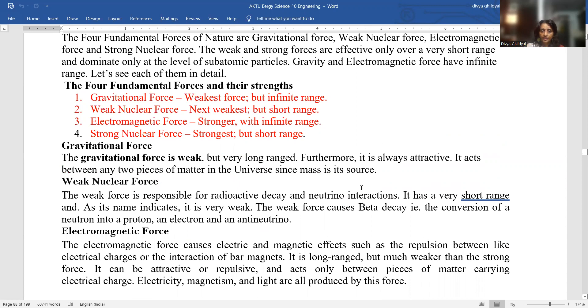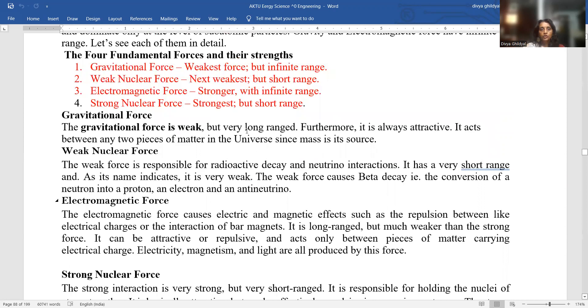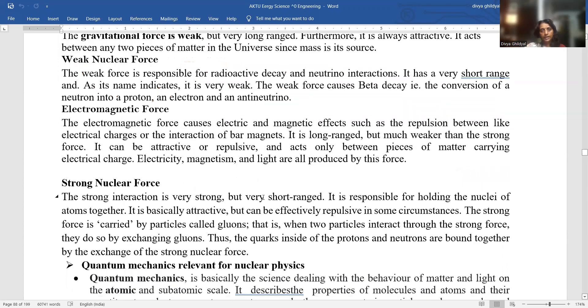Gravitational force is the weakest, but it has a very long range. It is always attractive. If you remember the formula, F is equal to G into M1 into M2 upon R squared. So it acts between two pieces of matter in the universe. Weak nuclear force is responsible for radioactive decay and neutrino interactions. It has a very short range and its name indicates it is weak. Electromagnetic forces, they are the cause of electric and magnetic effects such as repulsion between like electrical charges or the interaction of bar magnets. It is long ranged, but weaker than the strong force.